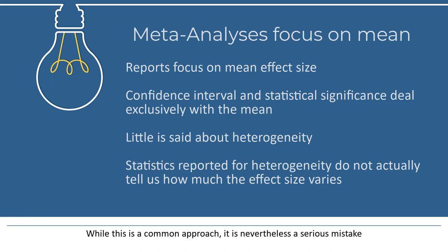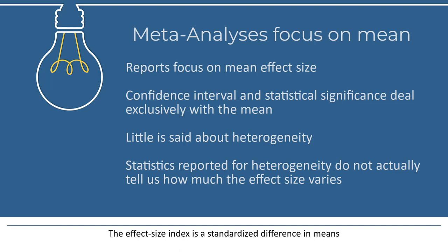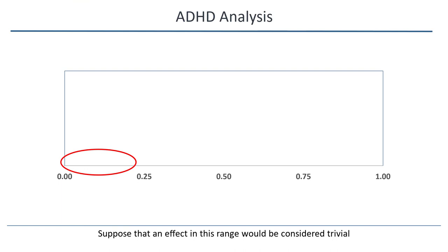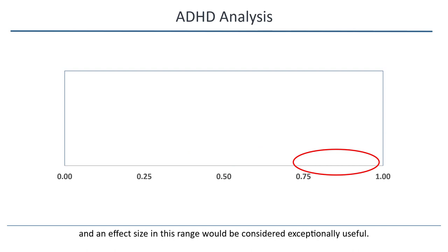We really need to understand how much the effect size varies across studies. In a few moments, I'll introduce a meta-analysis of studies that assessed the impact of a drug to improve cognitive function in adults with ADHD, or Attention Deficit Hyperactivity Disorder. The effect size index is a standardized difference in means. Suppose that an effect size in this range would be considered trivial, an effect size in this range would be considered moderately useful, and an effect size in this range would be considered exceptionally useful.